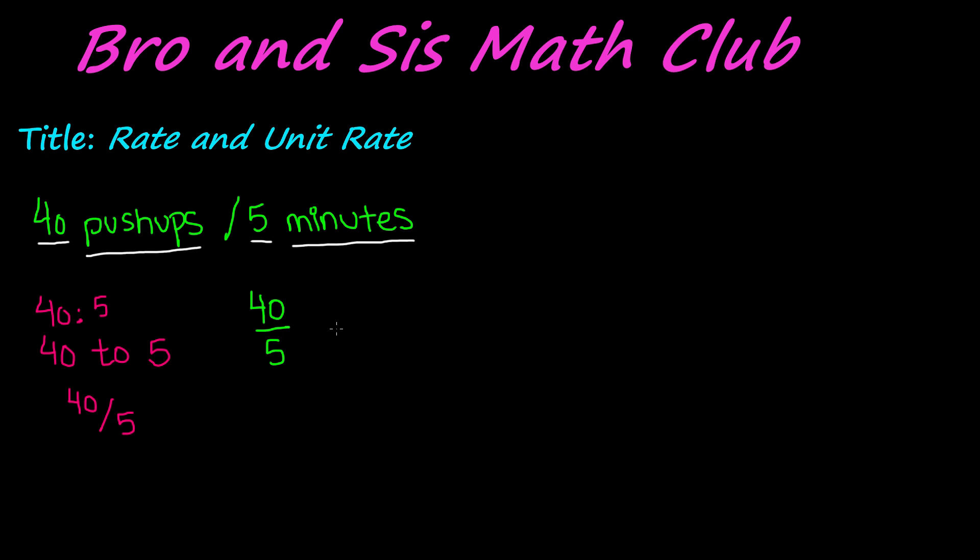The first one is we can simply divide the numerator and the denominator by the number 5. Because the denominator is 5, if you divide the denominator by itself, we know 5 divided by 5 will give us a denominator of 1, and therefore we will automatically have our unit rate. Remember, we have to do the same thing to the numerator, so divide it by 5, and 40 divided by 5 is 8. That means you can do 8 push-ups per minute. And per just means 1. So this is our unit rate, 8 push-ups per minute.